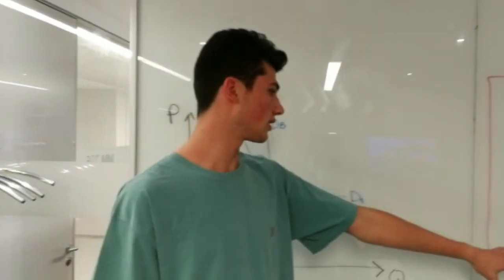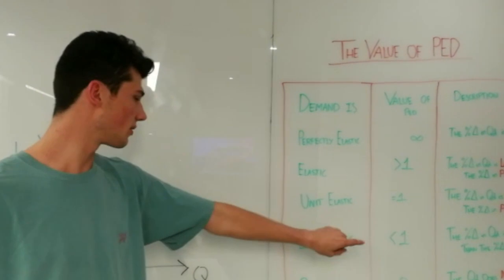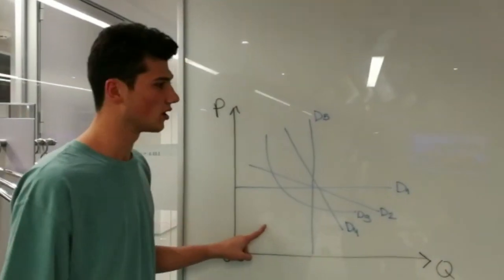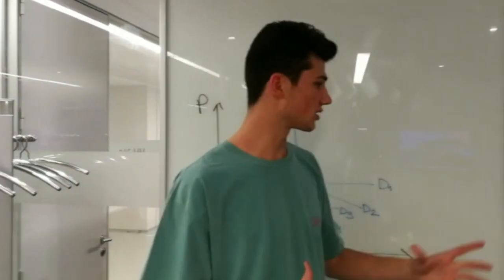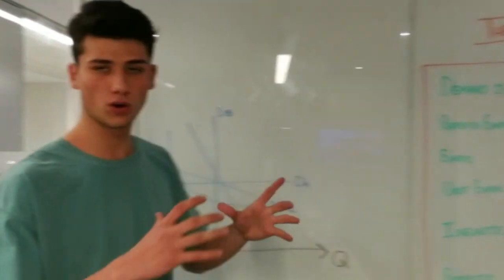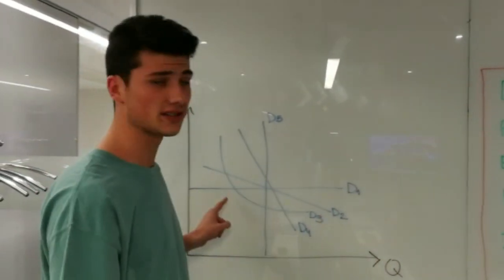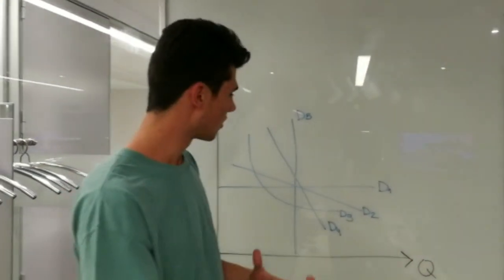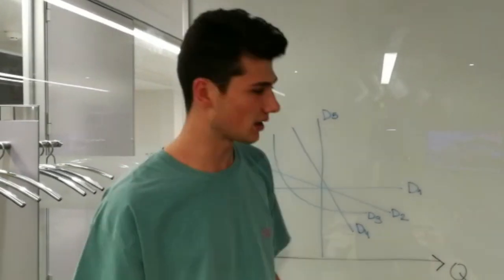Everything that has been previously explained in the table can be represented in a graph. The basic principle is that the more horizontal the function is, the more elastic it becomes, and vice versa — the more vertical the function is, the more inelastic it becomes.